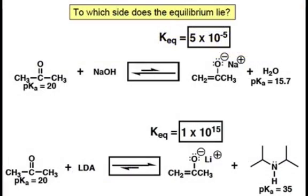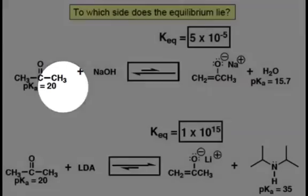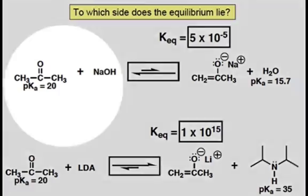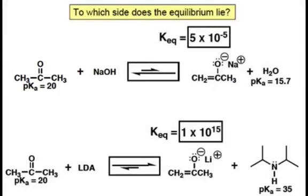By now you should have a good understanding of pKa and the ability to predict which side equilibrium favors. In looking at the reaction of sodium hydroxide and acetone, we compare the pKa of the two conjugate acids. Acetone has a pKa of 20 and water has a pKa of 15.7. Therefore equilibrium lies to the left in the weaker acid of acetone.